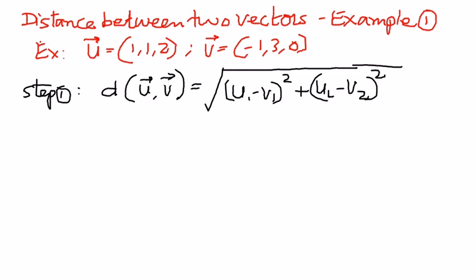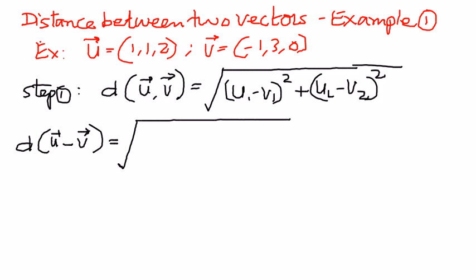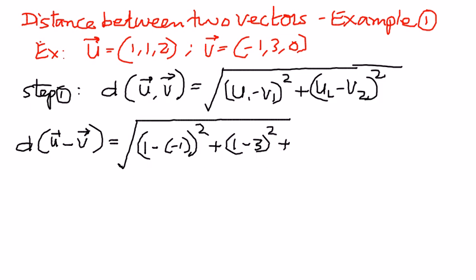The distance between vector u and vector v is going to be equal to the square root of: u1 is 1, and v1 is minus of minus 1 — that is the first component — all raised to the power of 2, plus (1 minus 3) raised to the power of 2, plus (2 minus 0) raised to the power of 2.